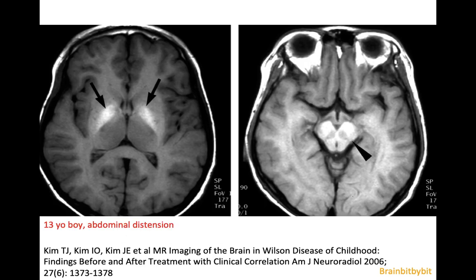Patients with Wilson's disease often present in the first decade with liver symptoms such as vomiting, jaundice, and ascites. This 13-year-old boy presented with abdominal distension, and on T1-weighted images you can see increased T1 signal in the inner part of the lentiform nucleus, the globus pallidus, and in the brainstem. This is caused by the accumulation of copper in the brain.